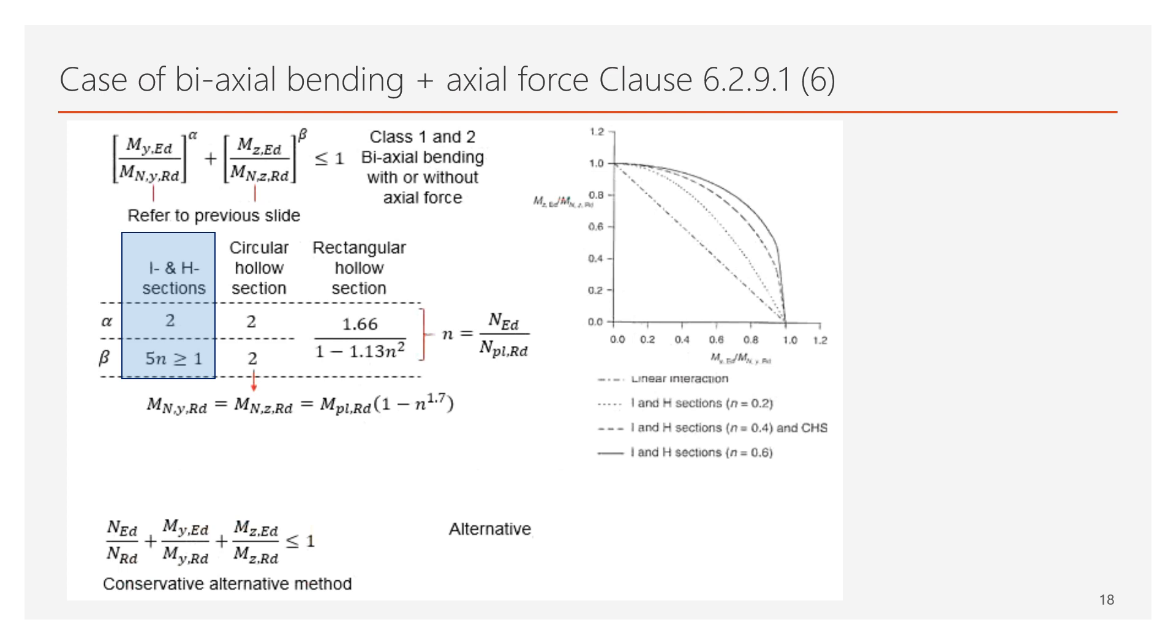Let us now review the case of biaxial bending moment. When there is a biaxial bending, meaning the bending is acting in the two principal directions, the highlighted equation may be applied. The MYED and MZED represent the acting design bending moment in the yy and in the zz axis, and MNYRD and MNZRD refer to the reduced moment capacity, which would be obtained as we discussed in the previous slides.